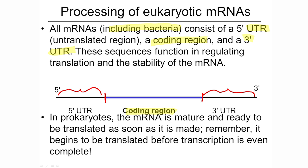Now, in bacteria, once the messenger RNA is mature, it's ready to be translated literally as soon as it's made. This molecule can interact with a ribosome and get translated. In fact, in bacteria, translation can start before transcription is even finished — these two processes are happening simultaneously.